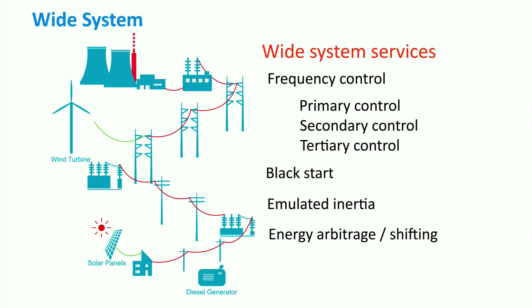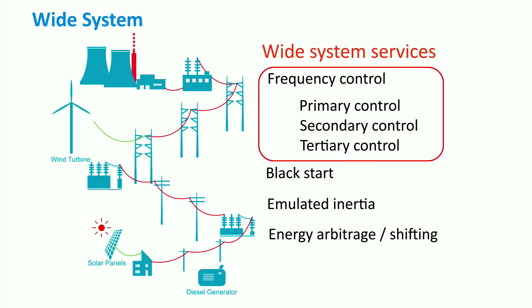At high grid levels, several services are provided at a wide area system. The most commonly known global service is frequency control, which is in general divided into primary, secondary, and tertiary control. These three control levels are based on the time scale of the provision of frequency support, which we will introduce and discuss in the next slides. Besides, following a wide area blackout, a black start procedure is to be implemented and followed. Other global services are, for instance, emulated inertia and energy arbitrage.